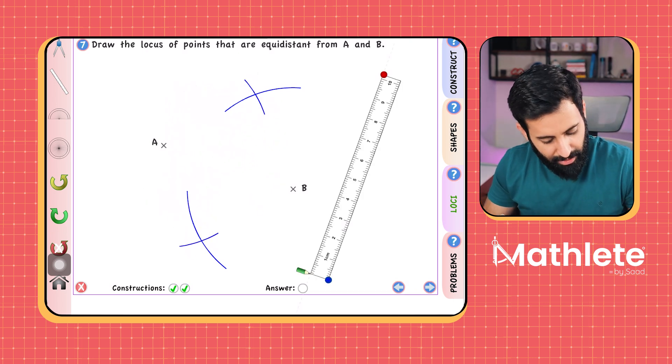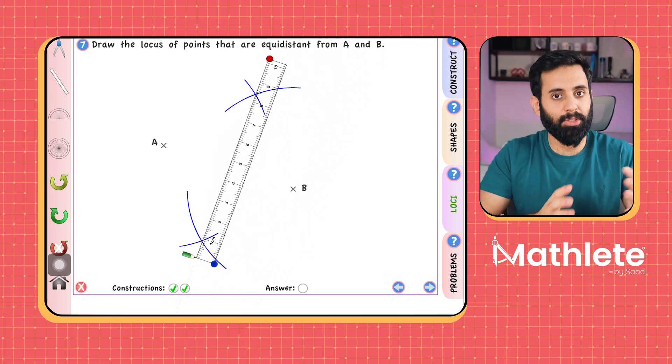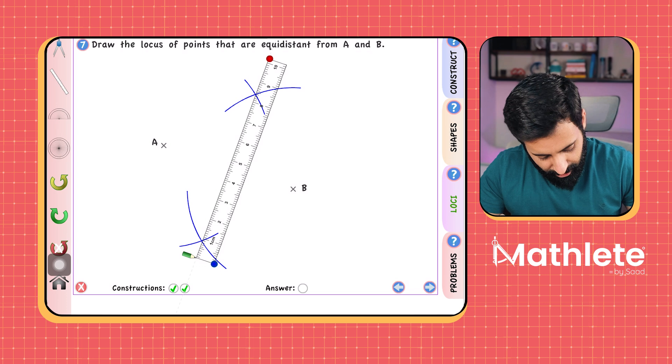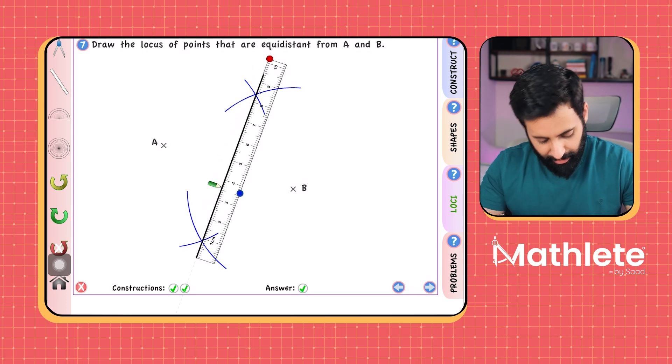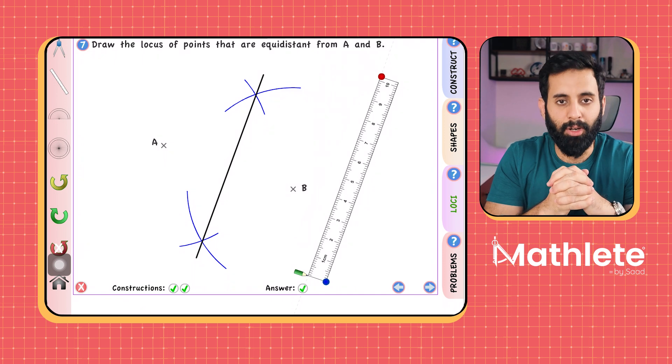Then you will have two points. And the two points will basically be the points where the pairs of arcs intersect, then you make a straight line by connecting the two points. And there you go, what you have is a perpendicular bisector of AB.